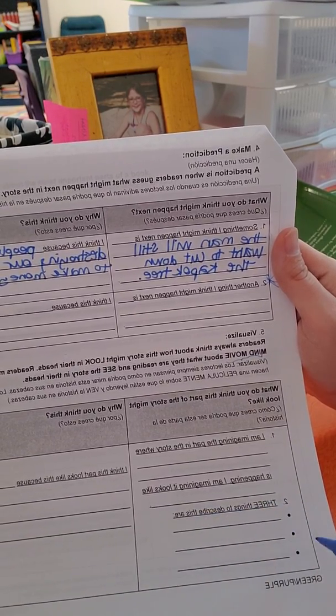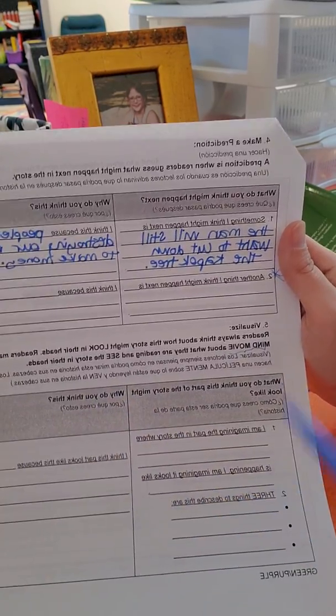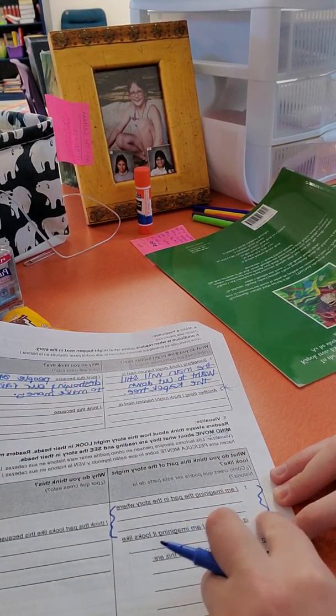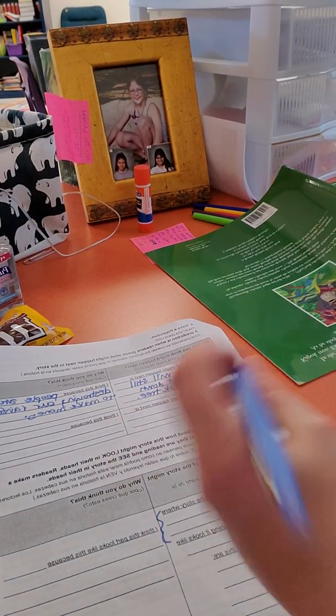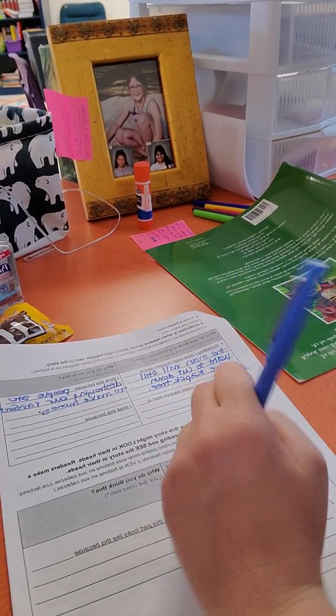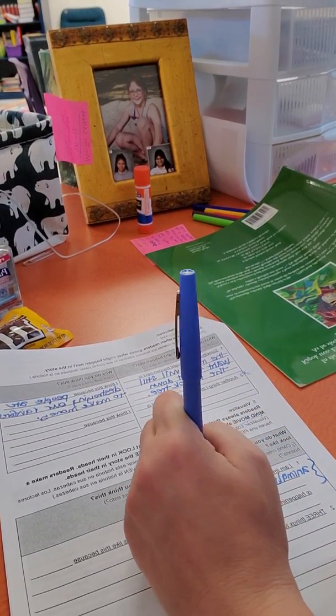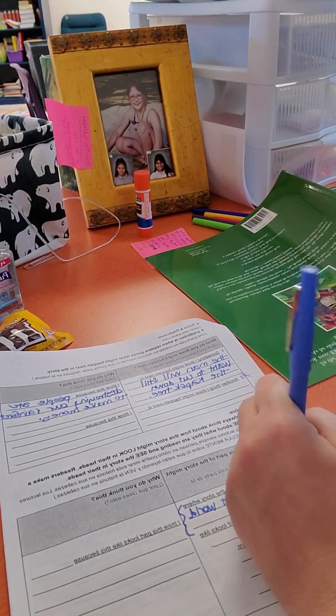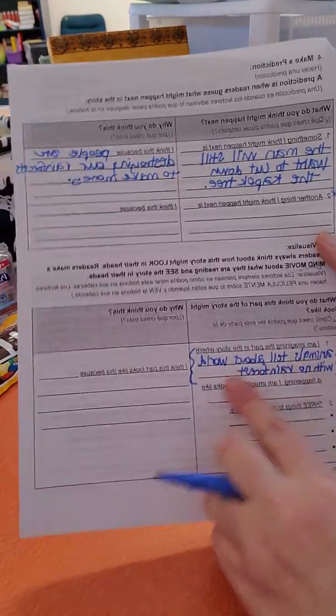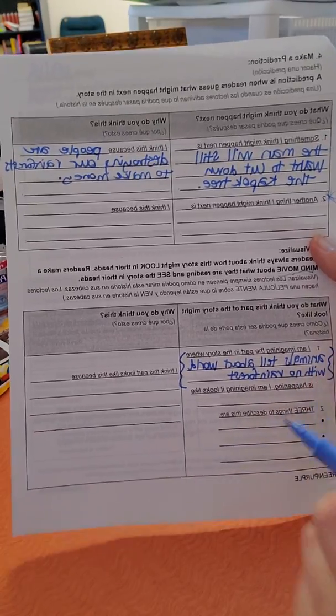So number one, I'm imagining the part in the story where blank is happening. I'm imagining it looks like blank. Three things to describe this are blank, blank, blank. I think this part looks like this because blank. So everybody will have this part match what I write. So you're going to copy down what I write right here. So I'm imagining the part in this story where animals tell about a world with no rainforest. So I'm imagining the part in the story where the animals tell about a world with no rainforest is happening. So go ahead and copy this down.